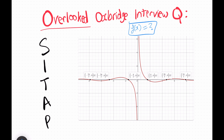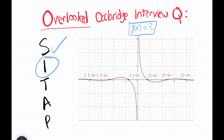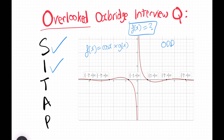Say we're given a graph and our problem is to work out what type of function it is. One of the best things about SITAP is that you can work backwards from the graph. Starting with symmetry, we can see the function is odd — reflecting it in both axes gives the same function. Looking at the period, there's a period of pi between the roots. Moving to intersections, the roots match those of the cos graph, so our function must be cos x times some other function.